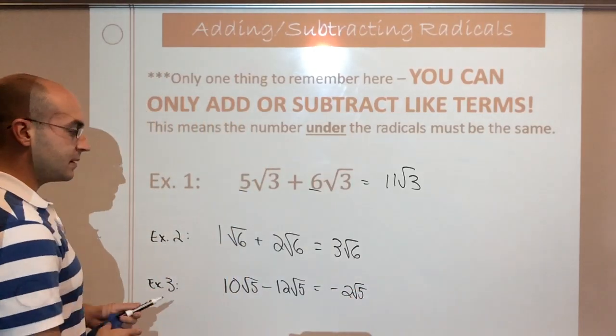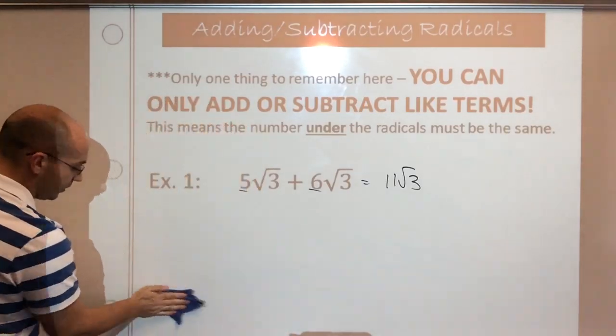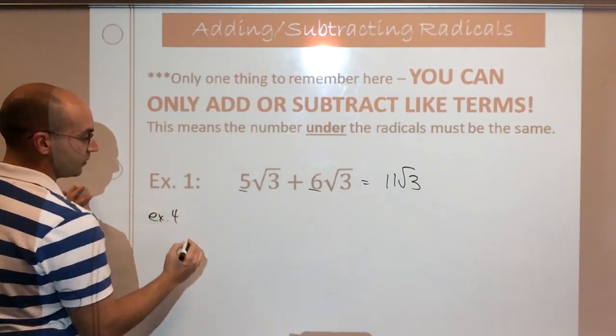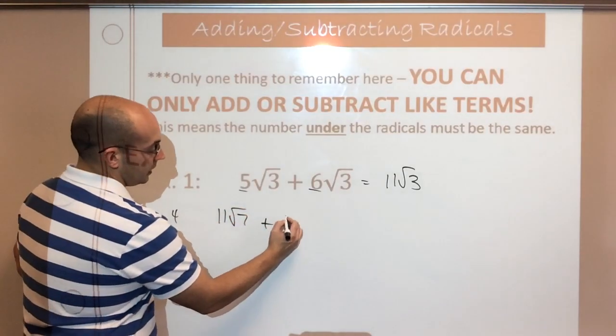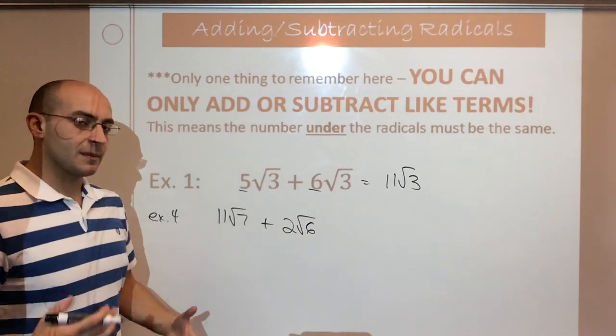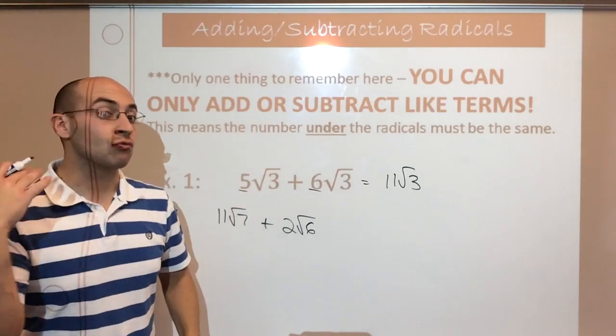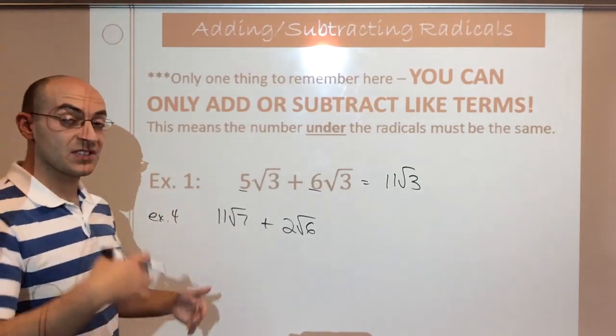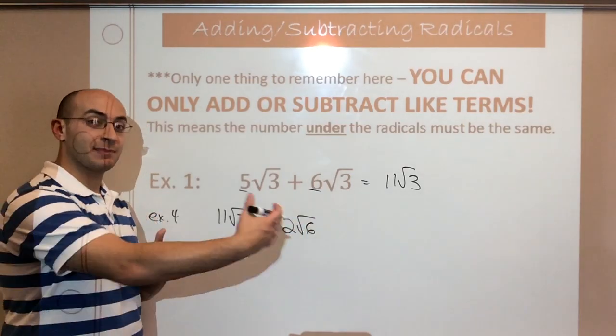Now obviously, these three are easy because I made them all like terms. Let's try one that doesn't have a like term just to see what you end up with. Because there is a right and wrong answer to that. So this would be example four. Let's go 11 root seven plus two root six. So 11 root seven plus two root six. Remember, now we're talking about simplifying, adding and subtracting radicals. I did not say give me the decimal form and add them together. I'm looking for the simplification of an expression. There's no equal sign here. I want you to simplify these terms.